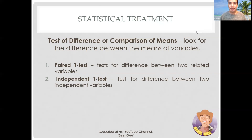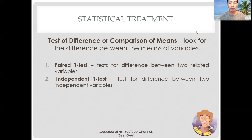Another is the independent t-test. This is used to test for a difference between two independent groups, like males and females. For example, if you are curious whether people from two different cities spend a different amount of money per month on movies, and you ask individuals from each city separately, it is appropriate to use the independent t-test.